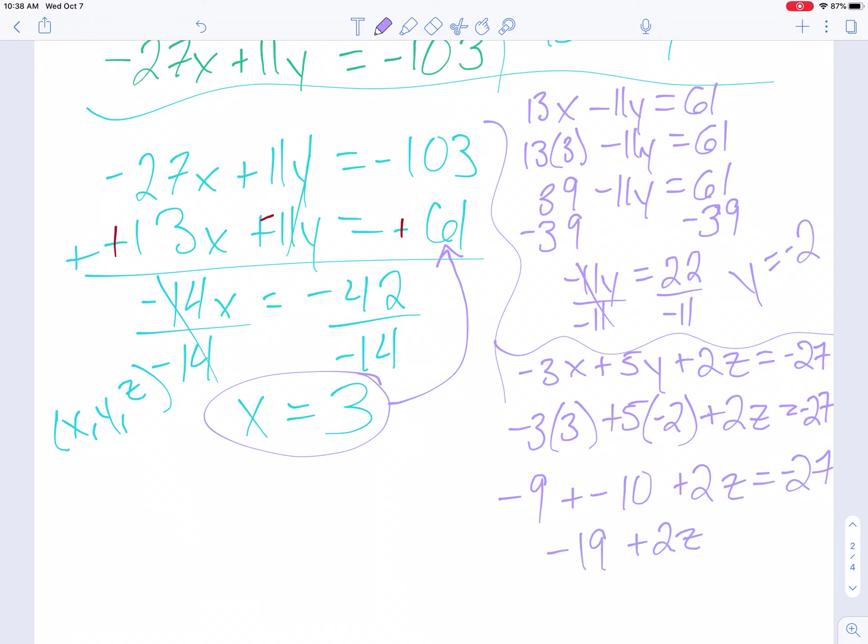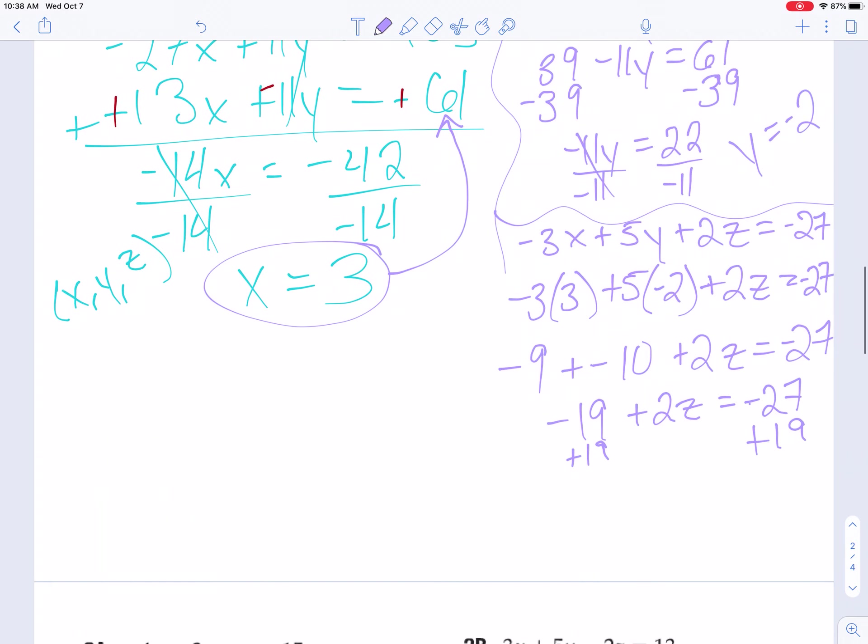Which means now I get to add 19 to both sides. Which is going to give me 2z equals negative 8. And when I get to divide by 2, I think z equals negative 4.